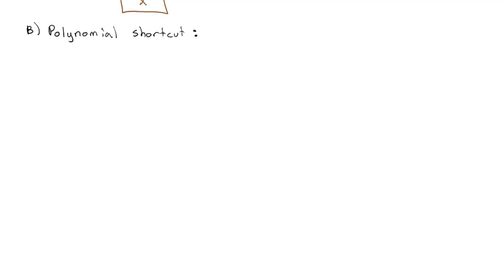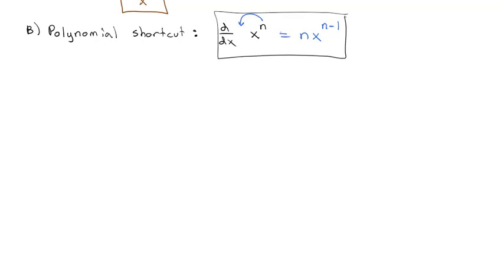The polynomial shortcut says that if we want to take the derivative of anything raised to an exponent, what we can always do is move the exponent out front, and then the exponent shrinks by 1. This is an important property — we're going to use it so much it will just become natural, but it is a good one to be very familiar with.